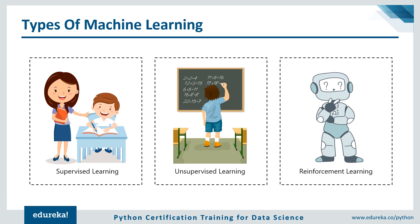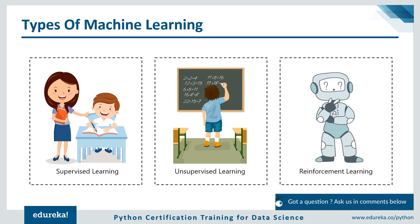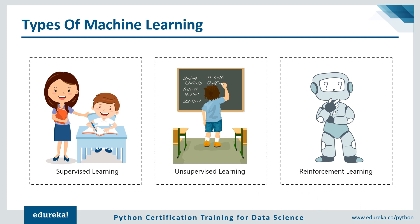Now let's take a look at the different types of machine learning. First, we have supervised learning. Supervised means to oversee or direct a certain activity and make sure it's done correctly. In this type of learning, the machine learns under guidance. Just like at school our teachers guided and taught us, similarly in supervised learning, machines learn by feeding them labeled data and explicitly telling them: this is the input and this is exactly how the output must look. The teacher in this case is the training data.